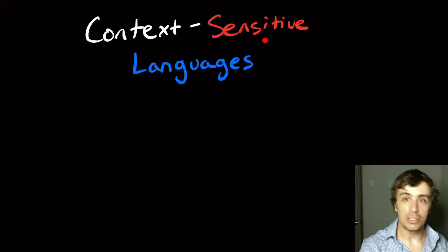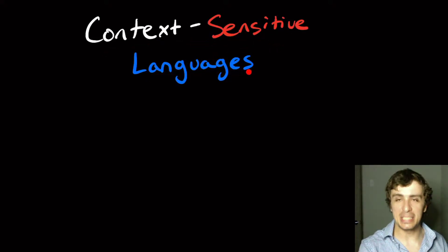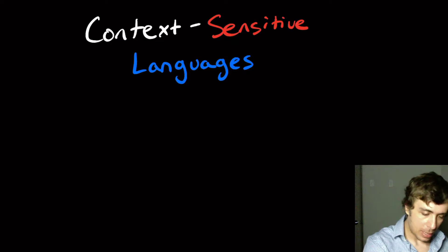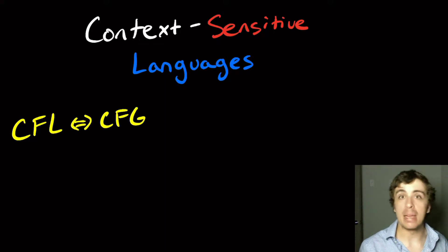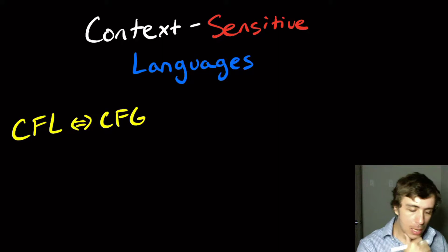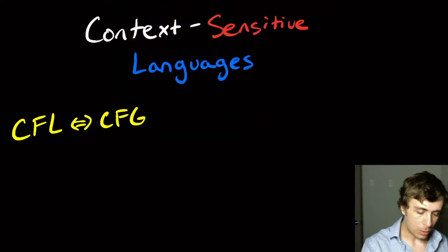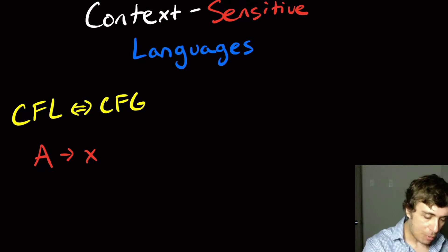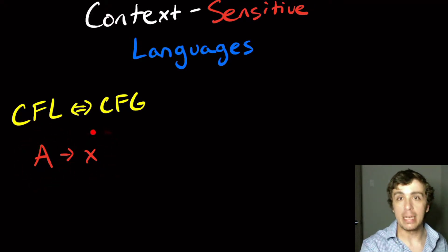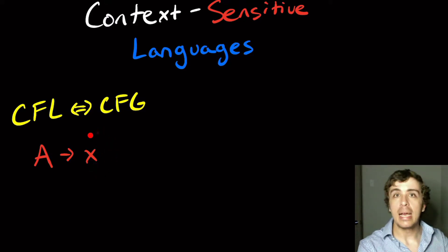I want to talk about something called a context-sensitive language, which is a generalization of context-free languages. In a context-free language — a CFL — those correspond to context-free grammars, PDAs, and so forth. In the context-free grammar world, whenever we have some variable, we can replace it with some stuff. So this A right here is a variable, and the X can be any mix of terminals and variables, in any number and any order that you wish.